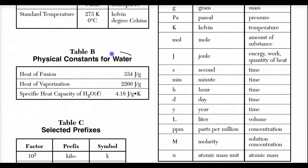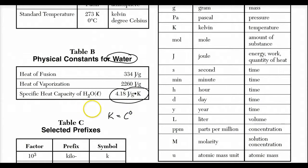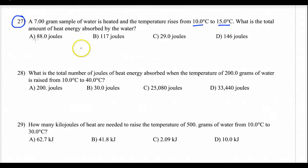It's important you understand that this is only for water, because we can use different specific heats. The specific heat for water is 4.18 joules per gram per degree Celsius. A Kelvin is equal to a degree Celsius — they're the same size — so it works for either unit. Let's go back to our problem.